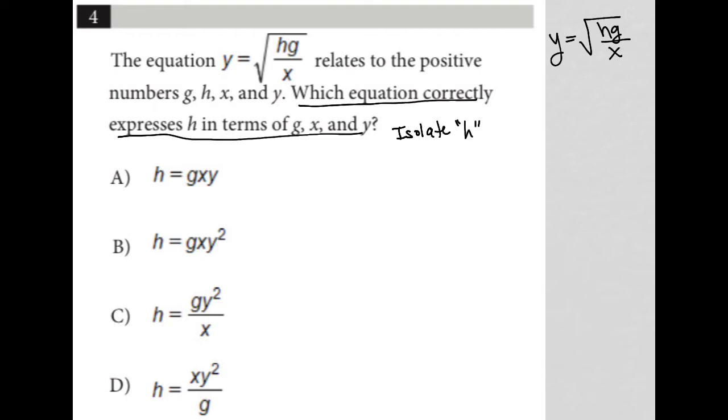We want to have an equation that says h equals instead of y equals. So let's start with what we have here and say, well, how do I get h out from under the square root and all those other letters away from it? So I'm going to start by squaring both sides because that allows me to get rid of the square root here.